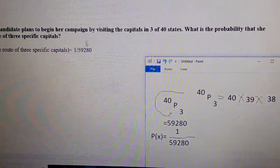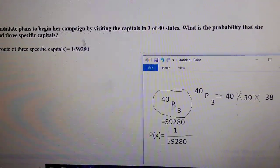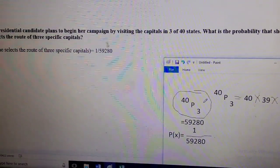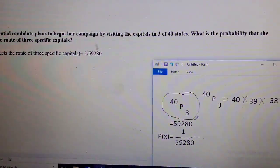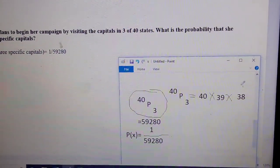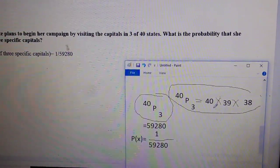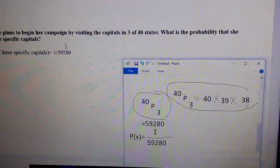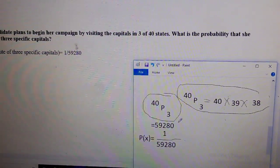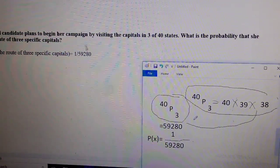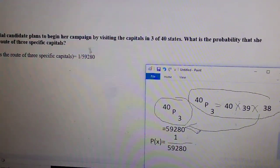We know that 40P3 is the possible ways. We can calculate 40P3 by using these: 40 times 39 times 38. We get this result, 59280.